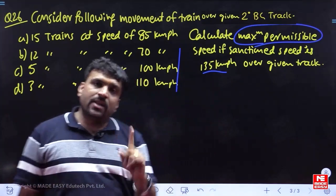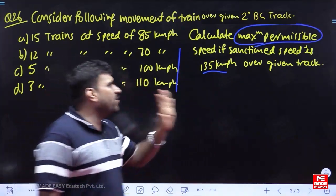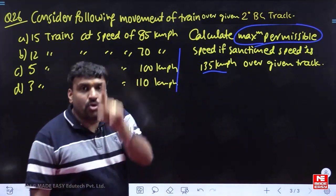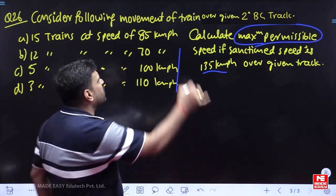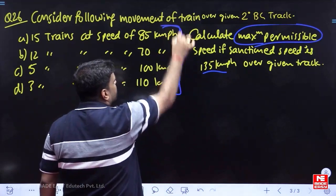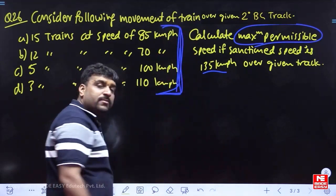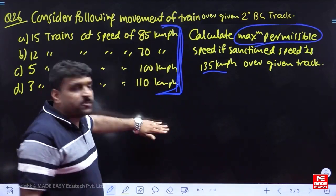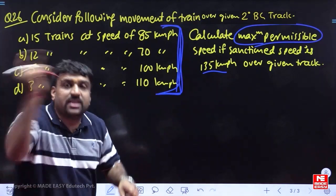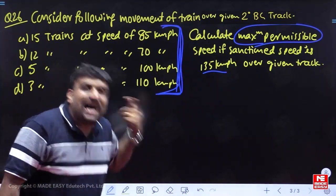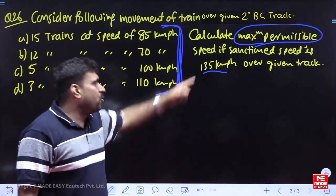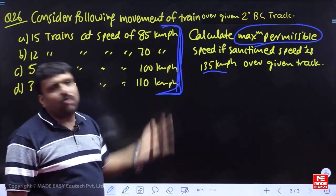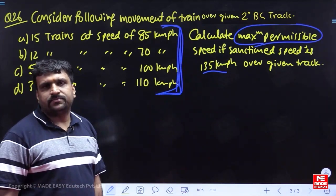The railway board wants to run Vande Bharat at 135, but you have to provide the super elevation as per the average speed or equilibrium speed. It means the super elevation is given as per this speed. Now Vande Bharat has to ask: can I come inside? The track will decide whether to allow it or not.